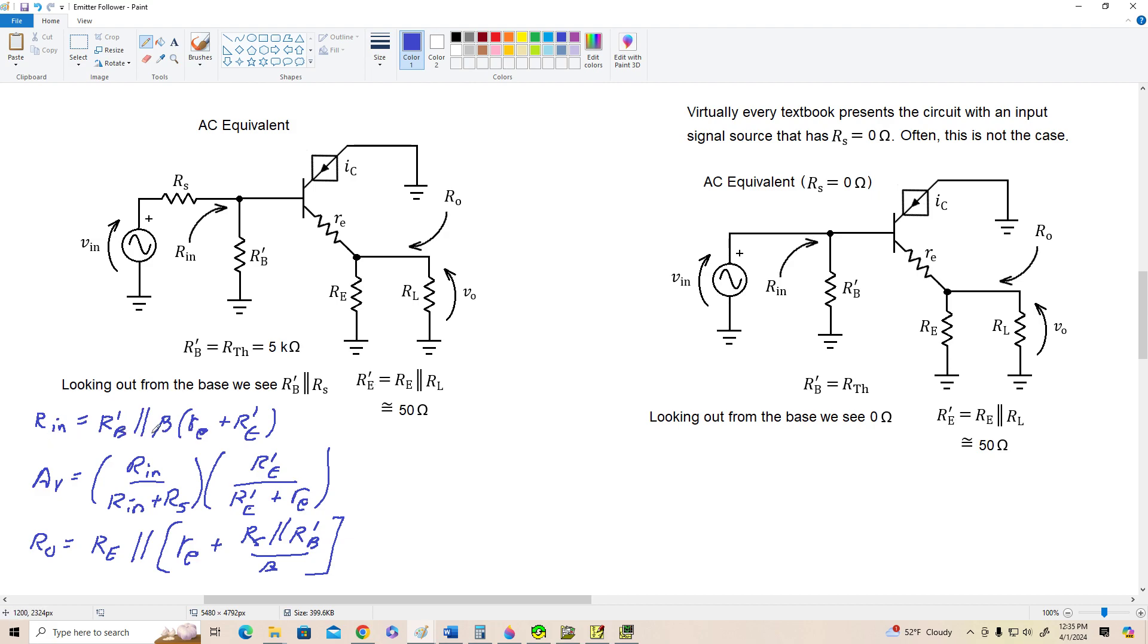Again, since RS is not part of that calculation, the same equation that we got here is going to apply to this one. So R'N is R'B in parallel with beta times little RE plus R'E. The voltage gain is going to be just this second term that we derived over here.